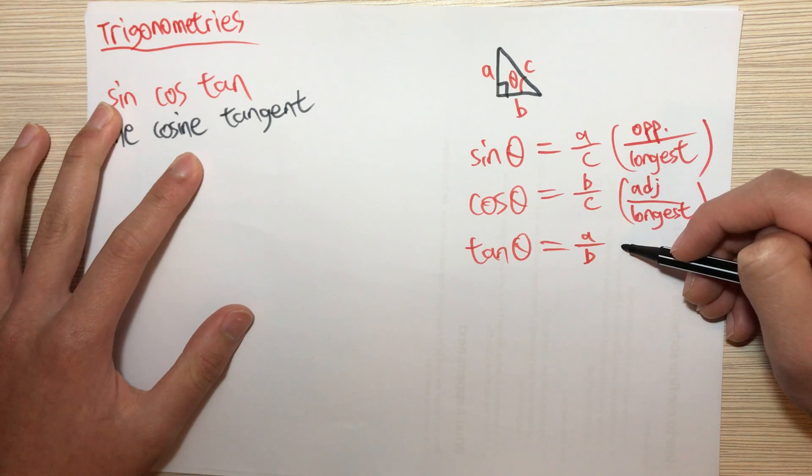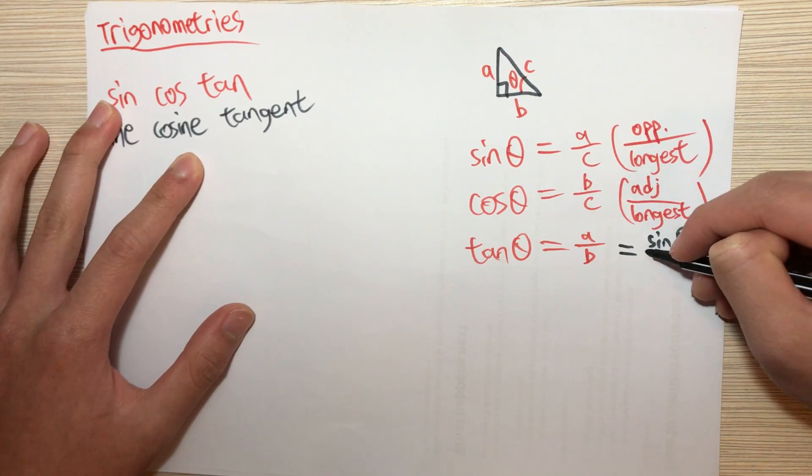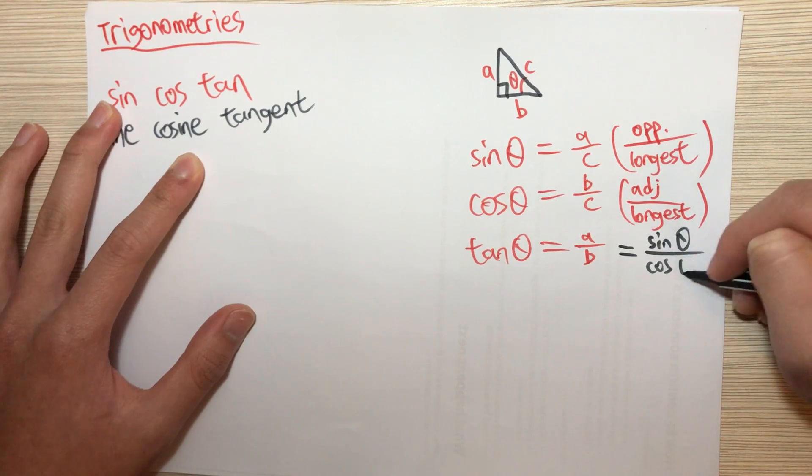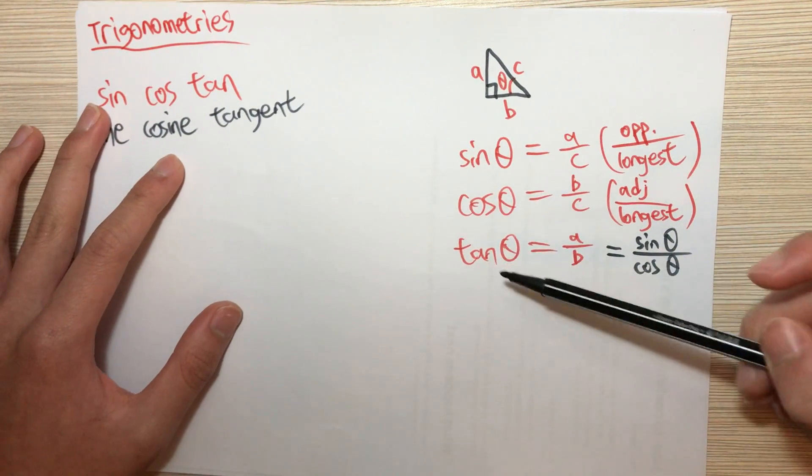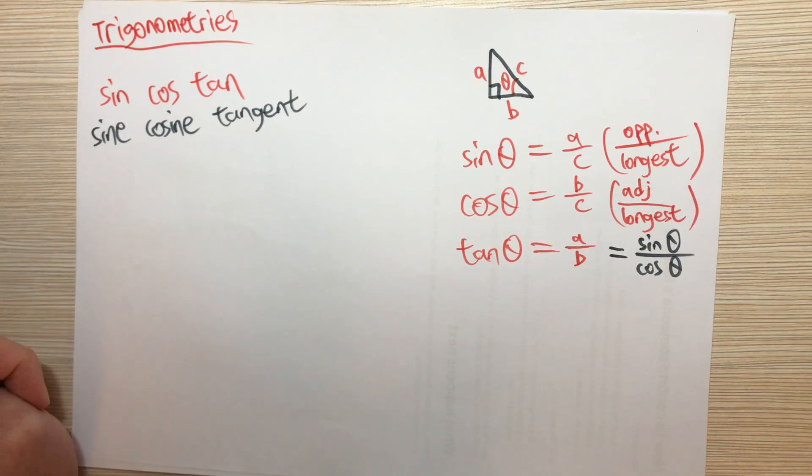Now how can we remember this? Just remember tangent theta is actually equal to sine theta over cosine theta. Now this relation is very useful in later calculations.